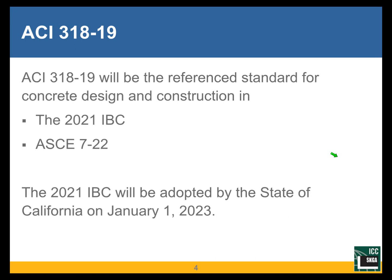ACI 318-19 has been adopted by the 2021 IBC, which will be out this fall of 2020. The 2021 IBC will be adopted by the state of California on January 1 of 2023. California is huge — it accounts for a very significant percentage of construction in the country. California is one of the few jurisdictions with a firm date for adoption, as they must adopt the new IBC that comes out every three years.